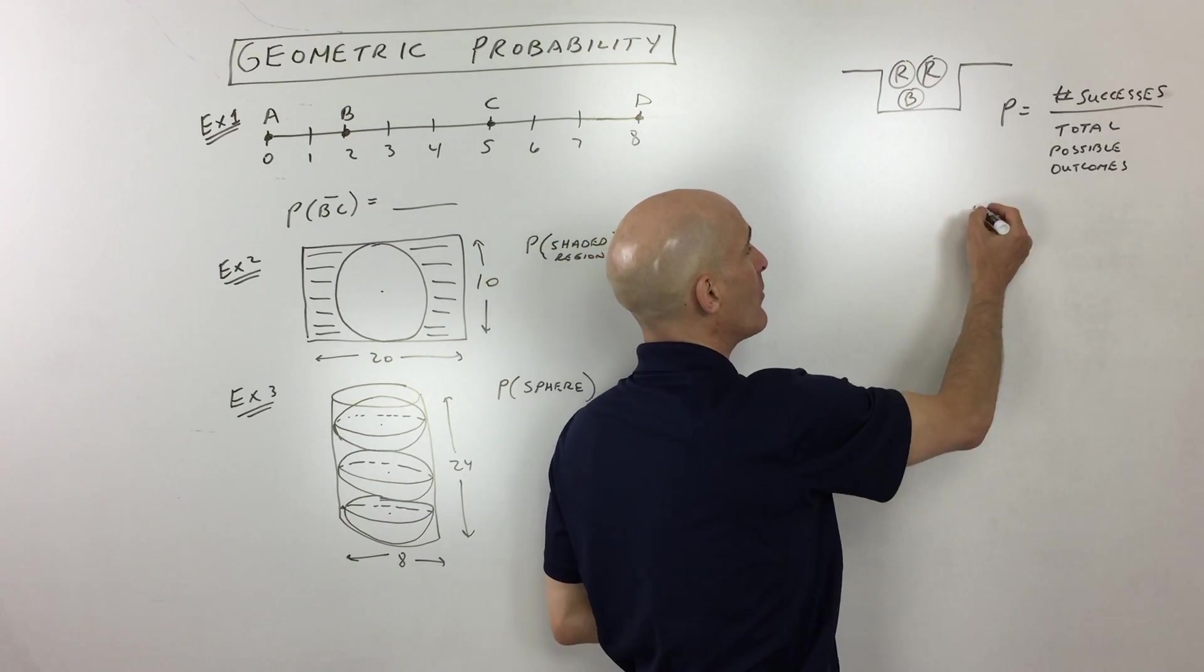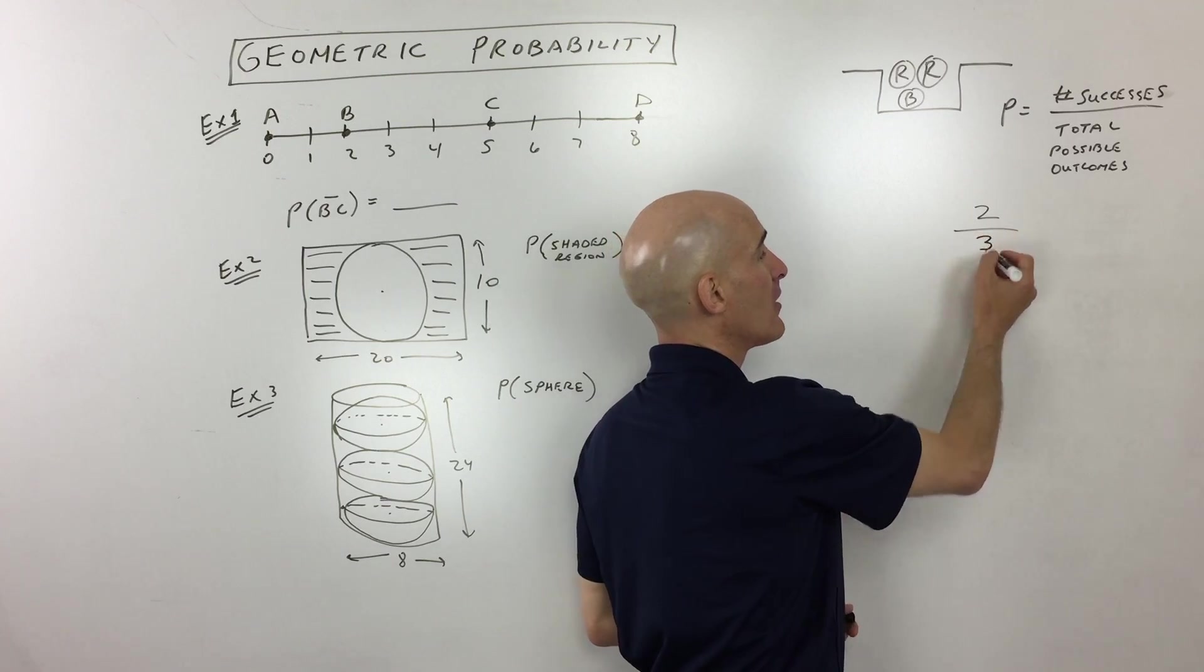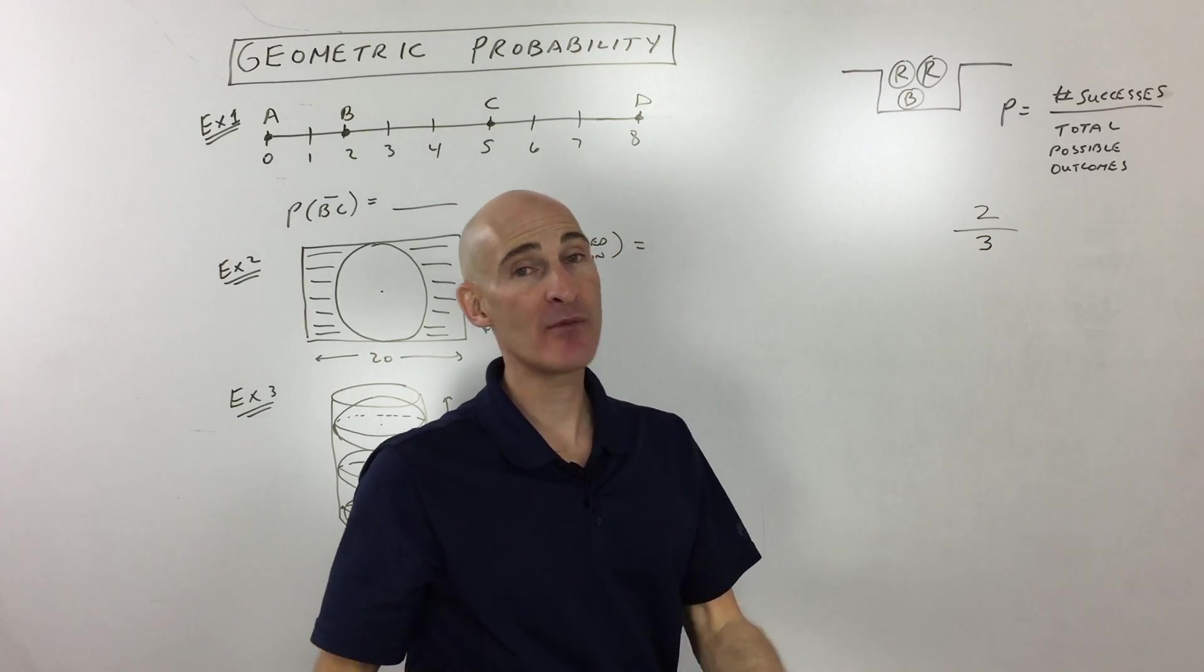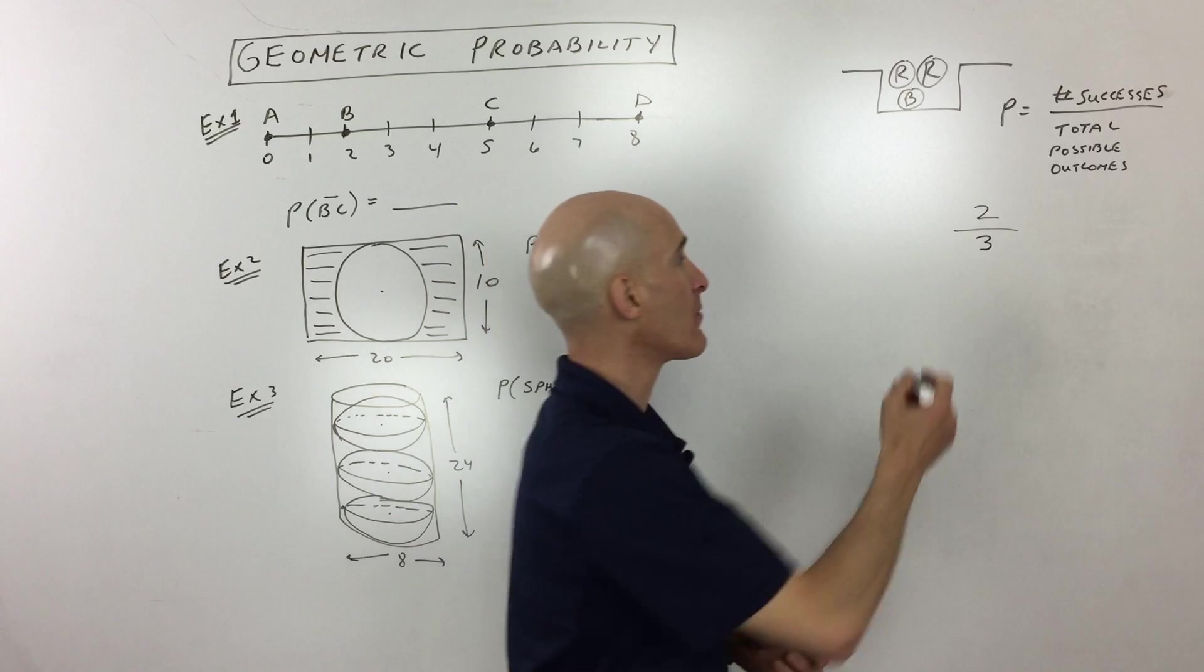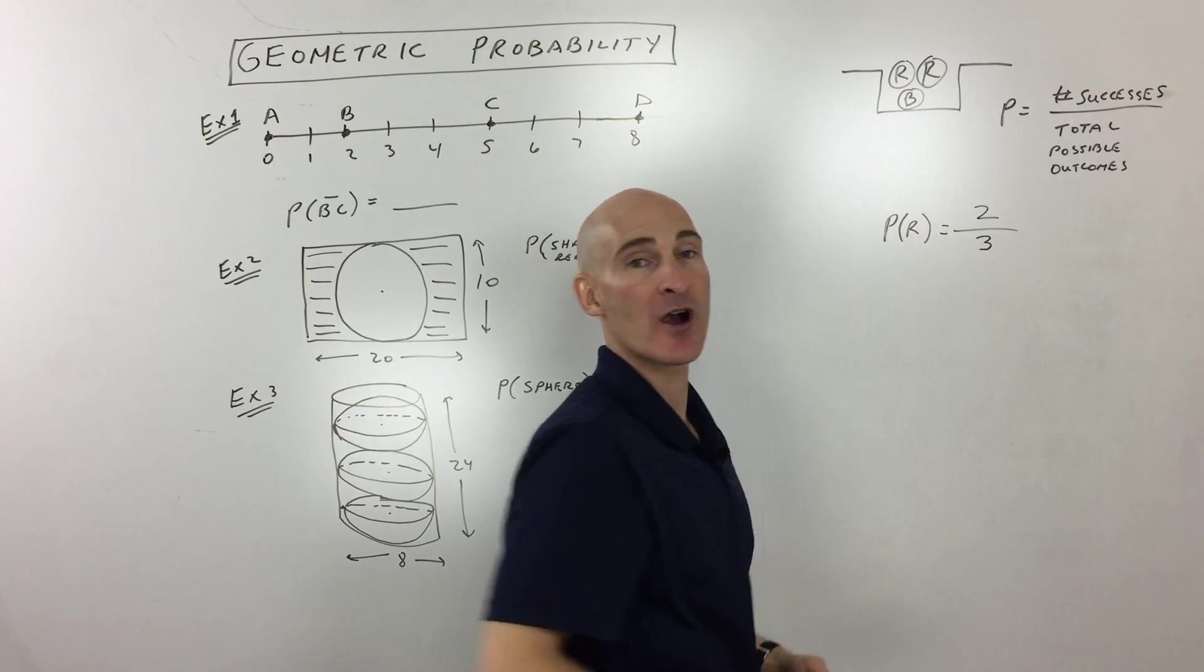So in this case, we want a red marble, so there's two chances of getting a red marble, out of a total of three possible marbles. So the probability would be two-thirds of picking a red marble. And you could write that as P of R, like the probability of a red marble.